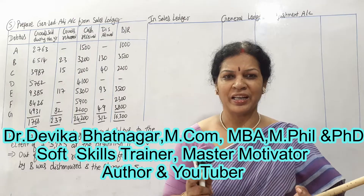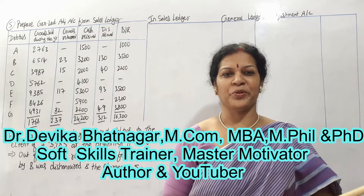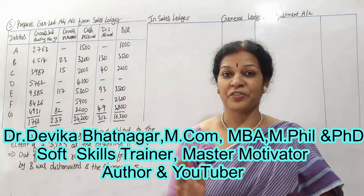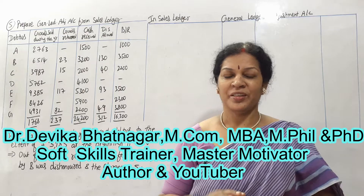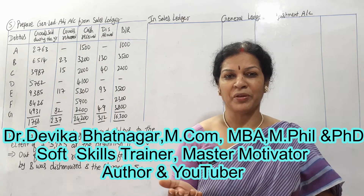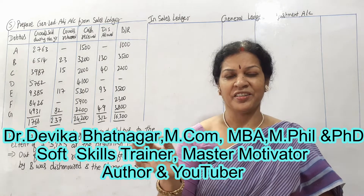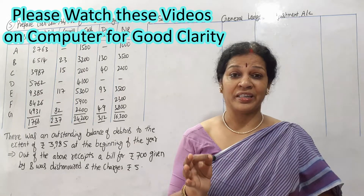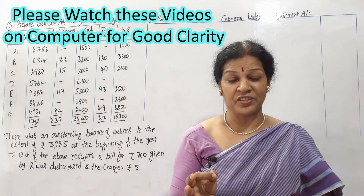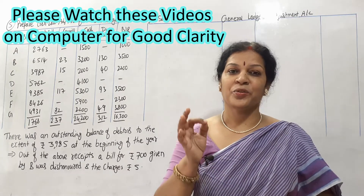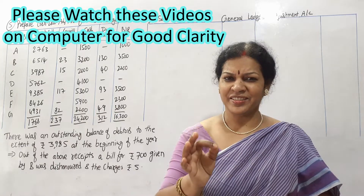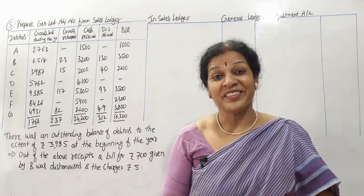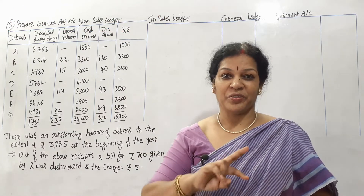This is the last problem on the self-balancing system, and it is definitely different from other problems. In previous problems, we prepared the debtors ledger adjustment account or creditors ledger adjustment account in the general ledger. Today, in the debtors ledger, we will prepare the general ledger adjustment account — in reverse.